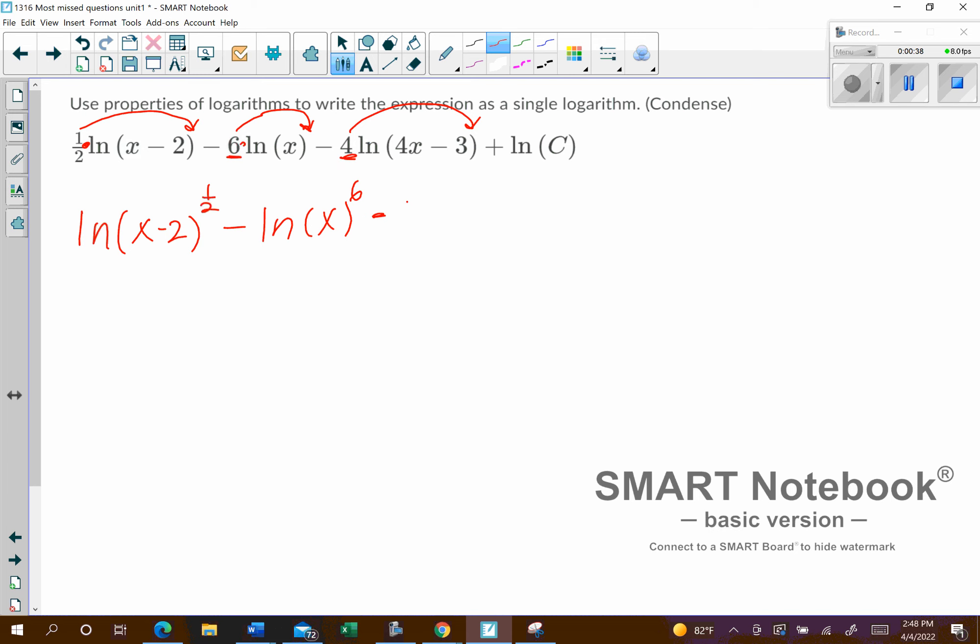Same thing here, so it'll be minus natural log of 4x minus 3 raised to a power of 4, and then we have plus the natural log of c.